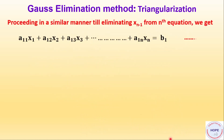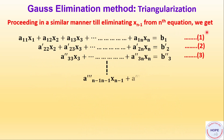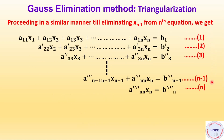Proceeding in a similar manner till eliminating xn-1 from the nth equation, we get equations like these. This is how we do the triangularization — in the second equation there is no x1, in the third equation there is no x2, and so on. Finally the last equation has only one term, xn. So as discussed earlier, we can apply back substitution: find xn from the last equation, then putting the value of xn in the second last equation we get xn-1, and proceeding in a similar manner we get all the values of x.